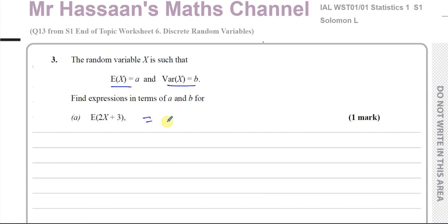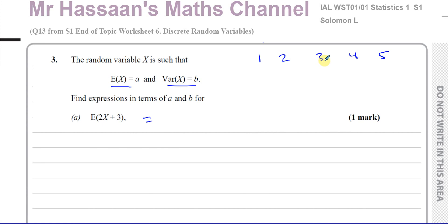The expected value of something — if there's some sort of coding where values have been multiplied by 2 and 3 has been added — addition and subtraction both affect the mean. For example, if I have the numbers 1, 2, 3, 4, 5, the mean is 3. That's 15 divided by 5, which is 3.